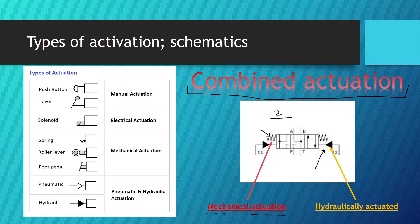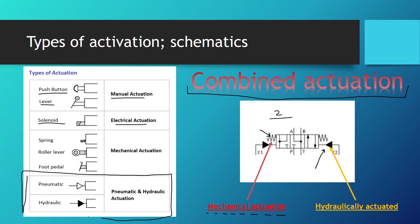Here we can see the types of actuation again. Push button and lever are manual actuations. Solenoid is electrical actuation. Mechanical actuations include spring, roller lever, and foot pedal. And pilot-operated actuations can be either pneumatic or hydraulic.